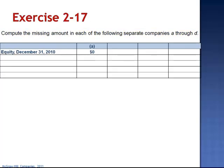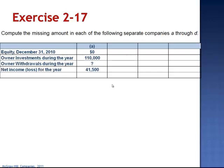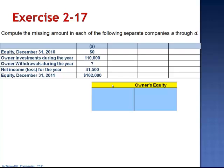Company A has equity at the beginning of the year of zero. Owner investments are $110,000. Owner withdrawals are unknown. We know that net income for the year is $41,500 and the ending equity balance is $102,000. We can set up our equity T account: beginning equity plus investments plus net income minus owner withdrawals minus any net losses yields the ending equity balance.